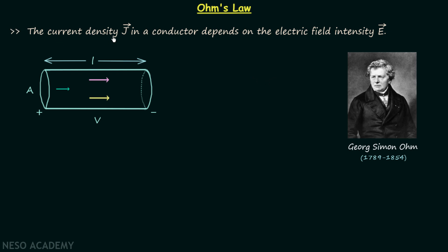According to Ohm's law, the current density J in a conductor depends on the electric field intensity E, the properties of the conductor, and the temperature. If we consider the conductor has the same properties and the temperature is not changed, then current density J is directly proportional to electric field intensity E. To understand this better, I have taken one conductor with cross-sectional area A and length L, and the voltage across the conductor is V. The current flows from the positive terminal to the negative terminal.